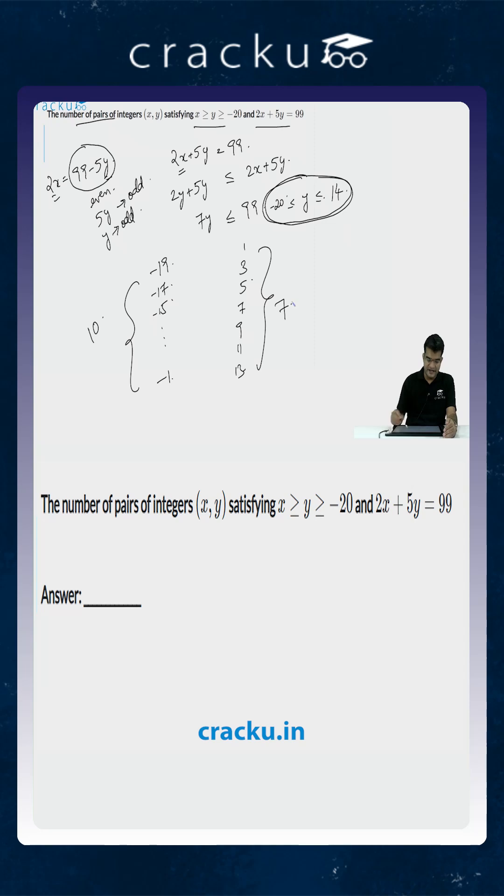So the total number of values that y can take are 10 plus 7 which is equal to 17 and for each such value of y we will be able to find a integral value for x. So the correct answer is 17.